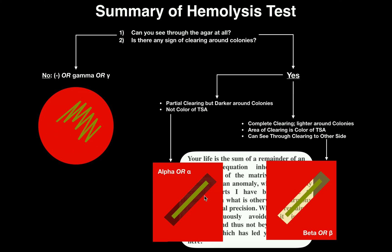This is the general procedure you would follow when looking at results to figure out which type of hemolysis you have. Beta hemolysis is complete hemolysis; alpha hemolysis is only partial; and then gamma, or no hemolysis, means none at all — all you see is just the red around the colonies with absolutely no degradation of those red blood cells. I hope this video gave you a good understanding of the hemolysis test, which is done on blood agar.